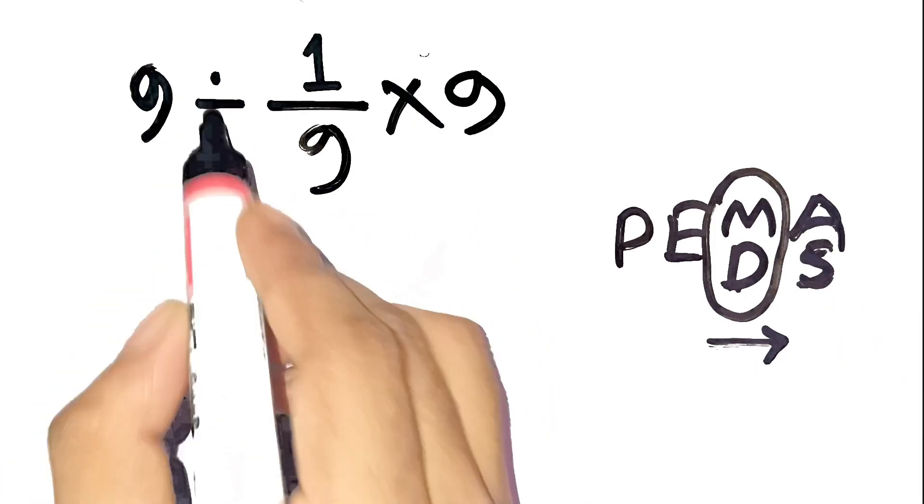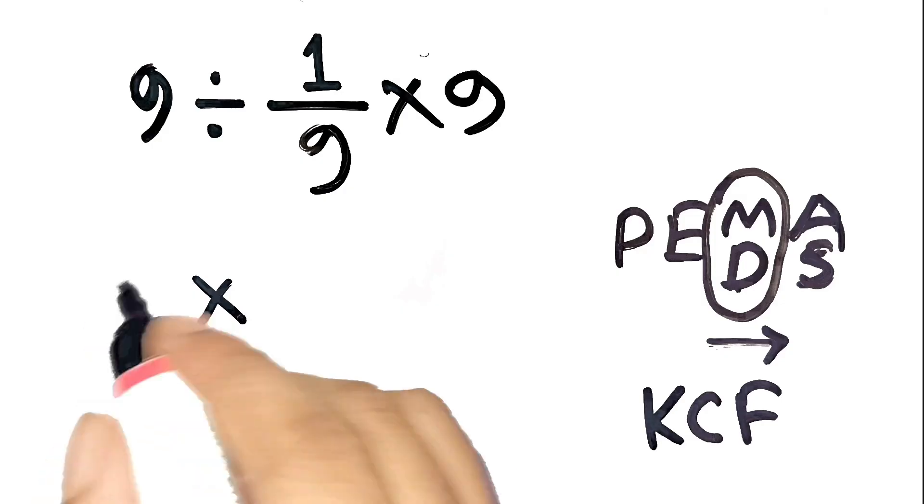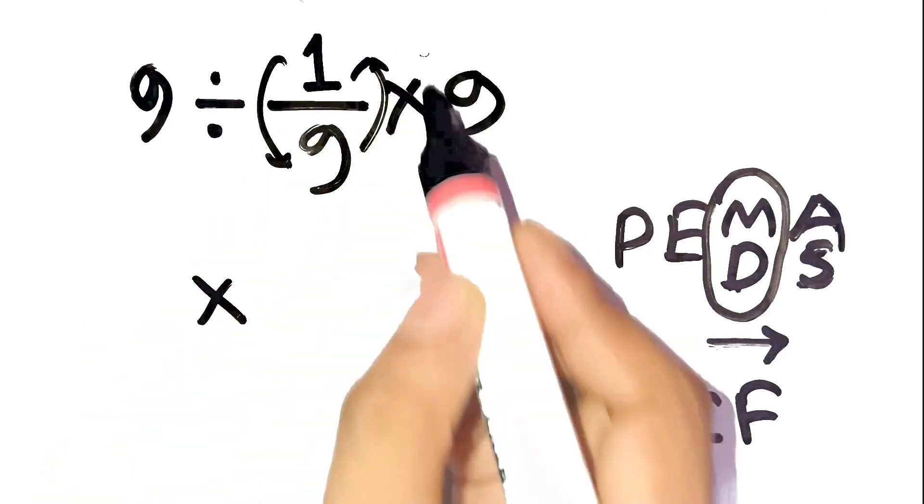Also, whenever you divide by a fraction, use the keep-change-flip rule, which just means you turn the division into multiplication by flipping the fraction. Step by step.